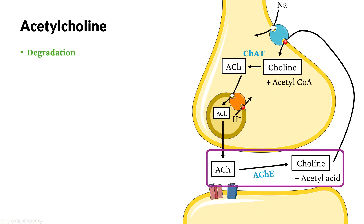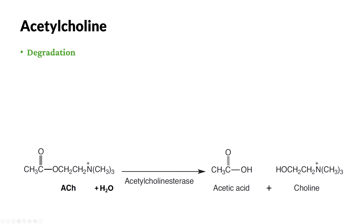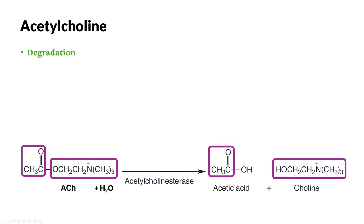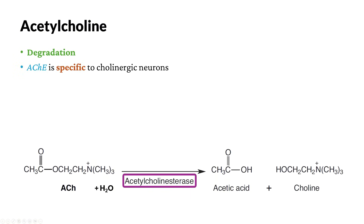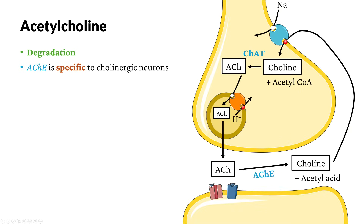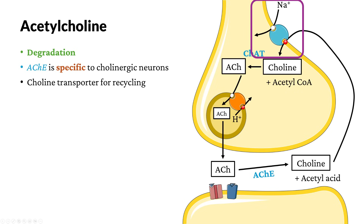Finally, we have degradation of acetylcholine. The degradation is a process of hydrolysis: a molecule of water is added, and acetylcholine is broken into two parts. The acetyl group and the choline group are broken off, forming acetic acid and choline. This process is catalyzed by acetylcholinesterase, which is also specific to cholinergic neurons. After degradation, the choline is recycled using choline transporters — the choline goes back into the axon terminal and can be used again to synthesize acetylcholine.